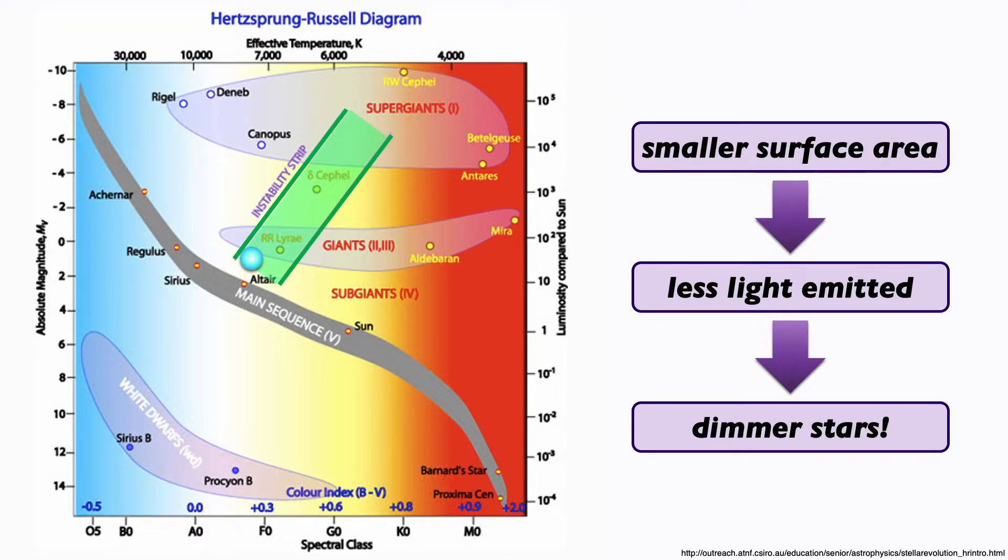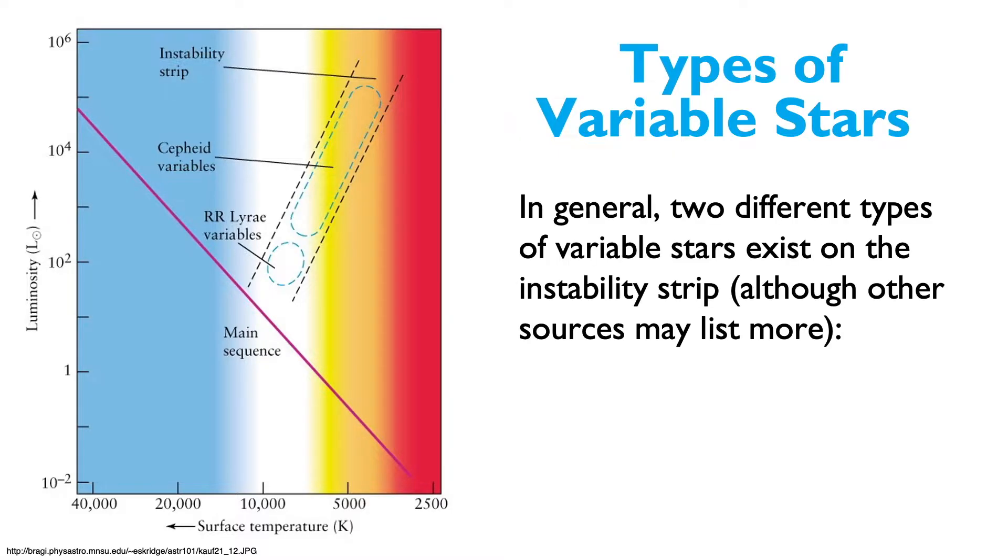Now, in general, there are two different types of variable stars. Other sources might list more subgroups of these, but we'll focus on the following: RR Lyrae variable stars and Cepheid variables.